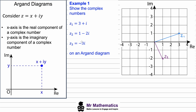For z3 we have negative three for the imaginary part but zero for the real part, so the coordinates are (0, -3). We plot this here and label it z3. This is how you plot complex numbers on an Argand diagram.